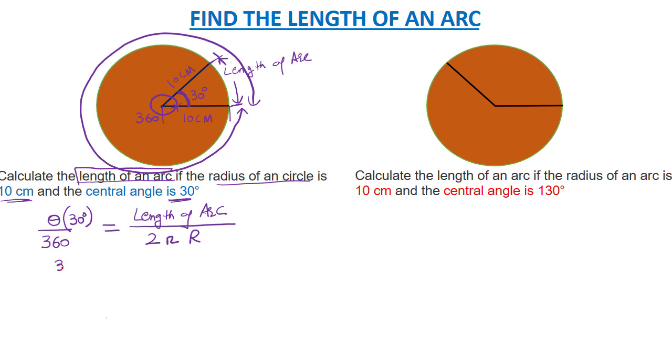Now we can put the values: 30 divided by 360 equals length of arc divided by 2π times 10, because the radius of the circle is 10 cm. So 30/360 times 2π times 10 equals the length of the arc.